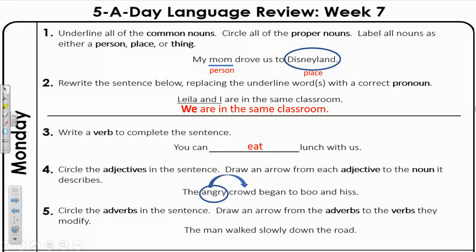Finally, number five: circle the adverbs in the sentence. Draw an arrow from the adverbs to the verbs they modify. The sentence is: The man walked slowly down the road. There should be one that is obvious to you because it ends with -ly. The adverb here is slowly.